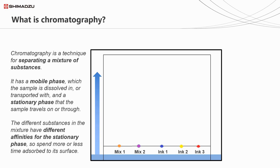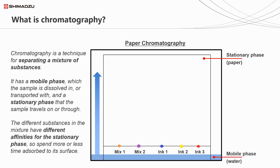We do this using two phases - what we call a mobile and a stationary phase. As the name suggests, the mobile phase moves and the stationary phase doesn't. In the example we're going to show you here, this is a very simple form of chromatography called paper chromatography. Essentially, we take a piece of paper and stand it end up in a glass tank with a very shallow amount of fluid at the bottom. The stationary phase is the paper - it's not going to move. The mobile phase is the water, and that water is, over time, slowly going to soak up the paper.